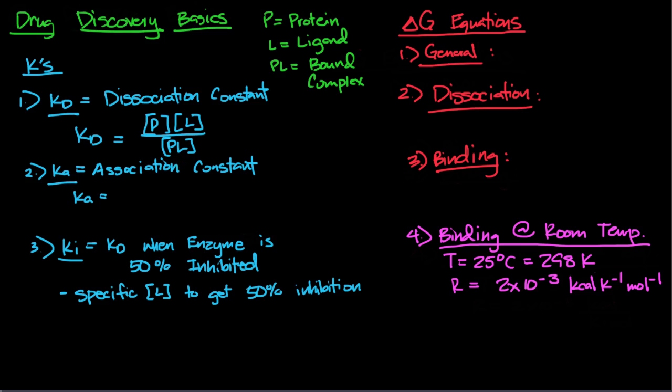On the other hand, Ka is the association constant. Ka equals [PL] divided by the concentration of P times L. The higher Kd is, the more likely your bound complex is to dissociate. The higher your Ka, the less likely your bound complex is to dissociate. One thing you definitely want to recognize is that Kd equals 1 over Ka—they're inversely related. You can't have both Kd and Ka be high.